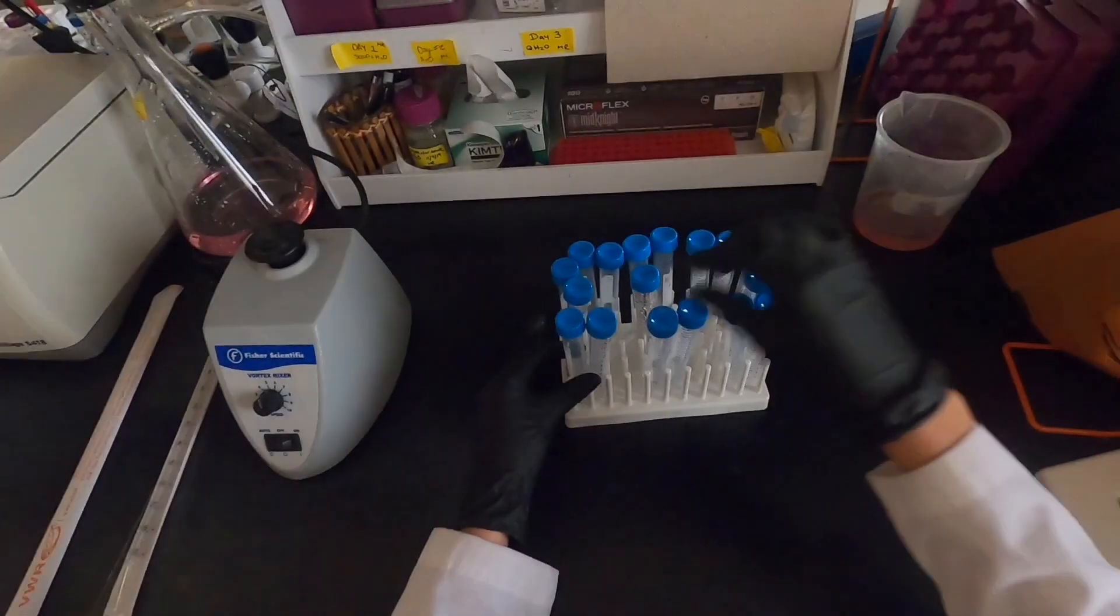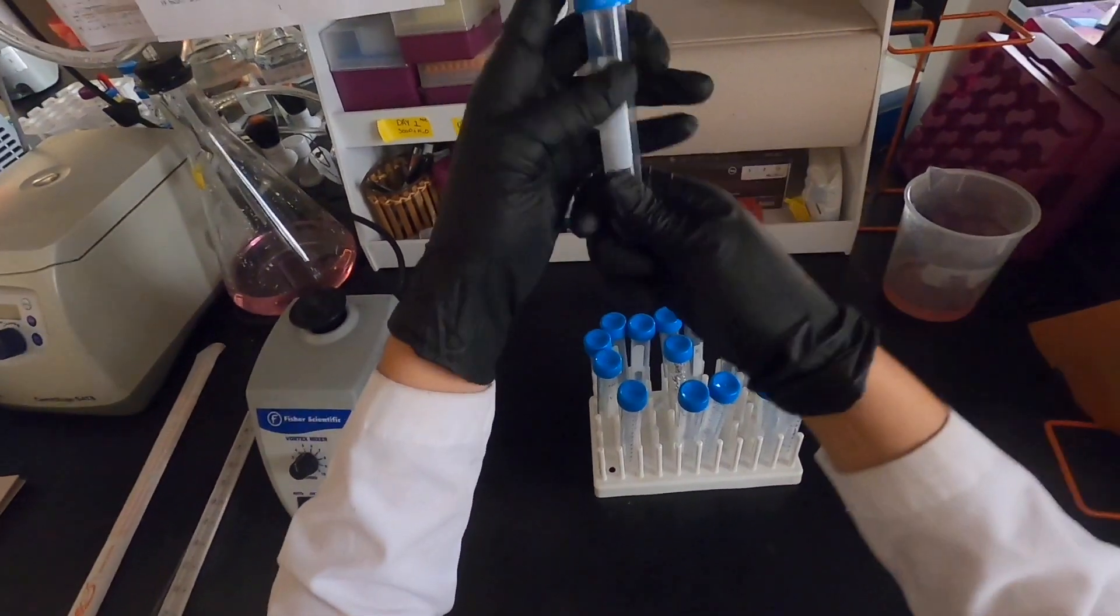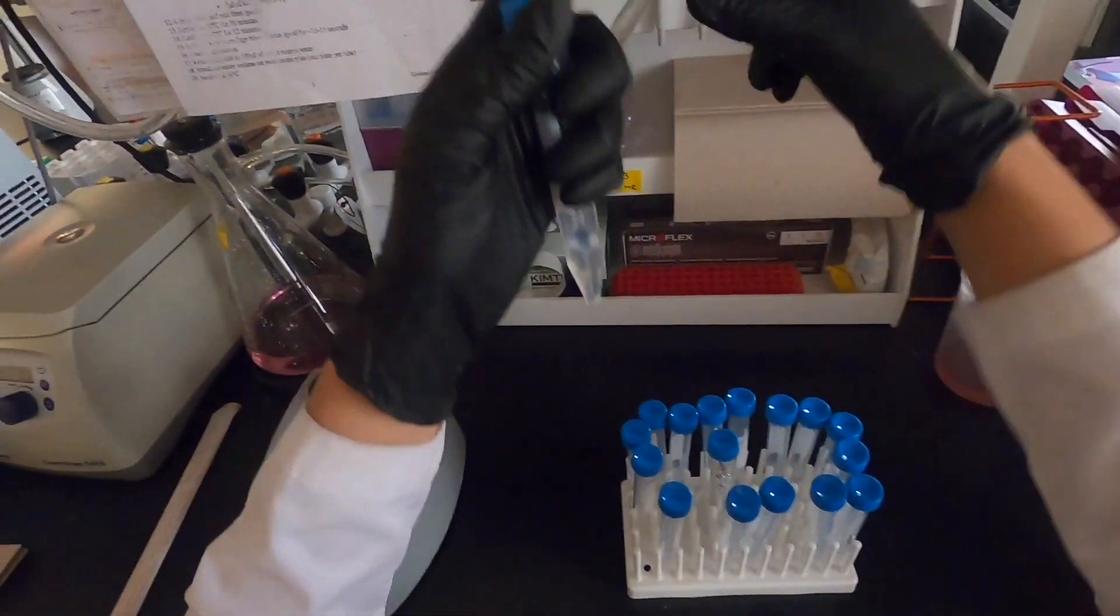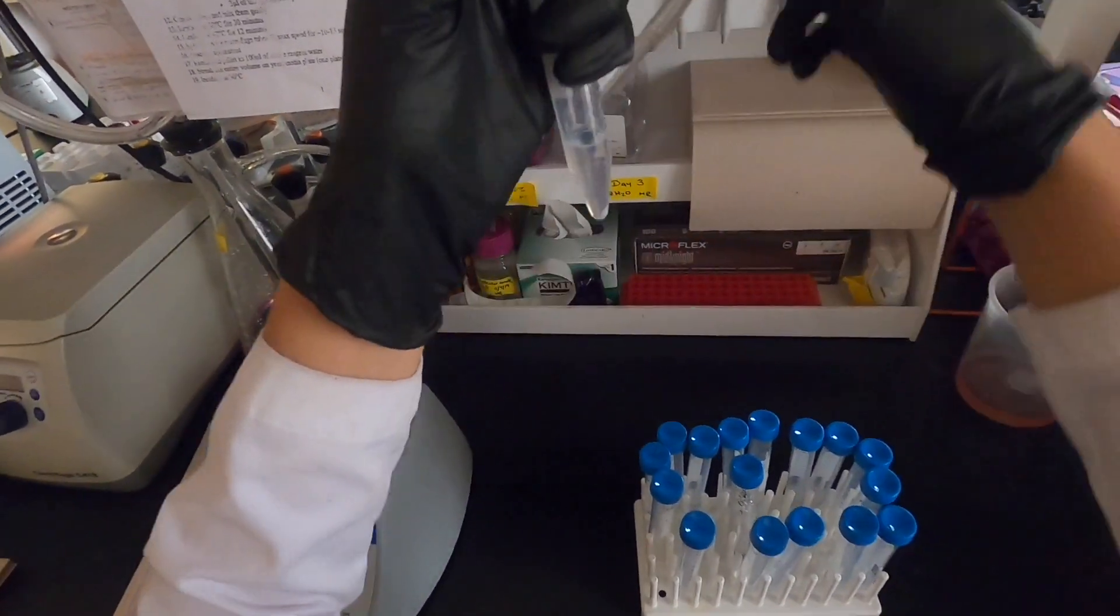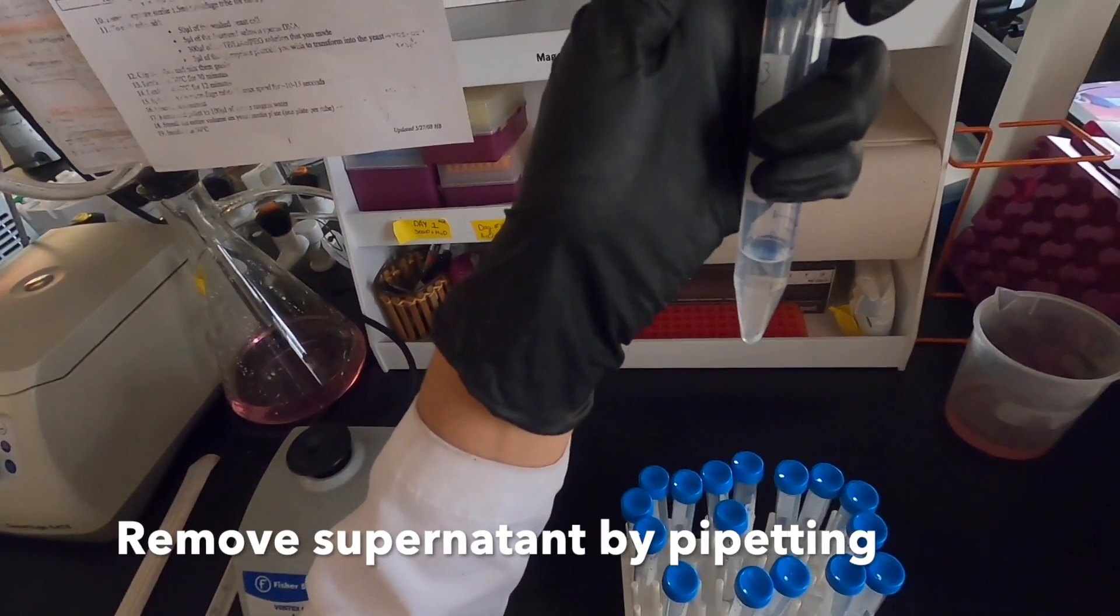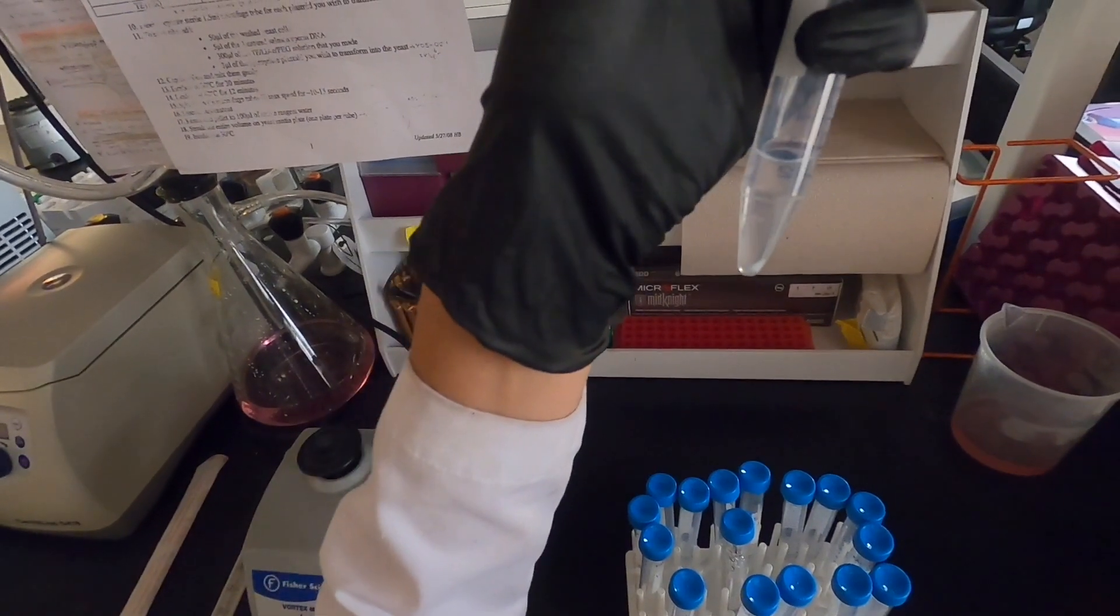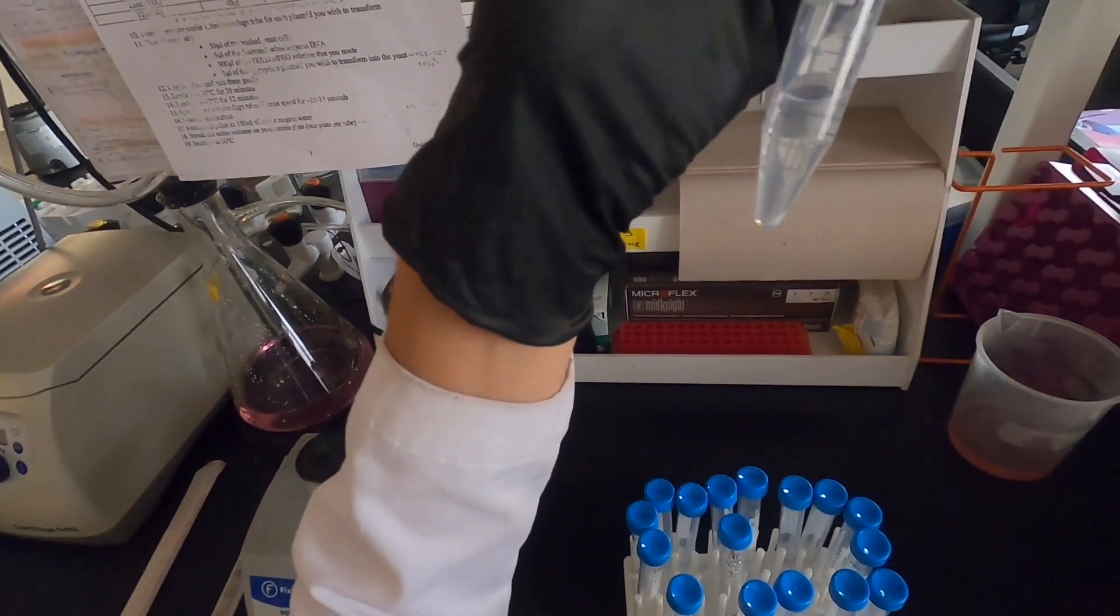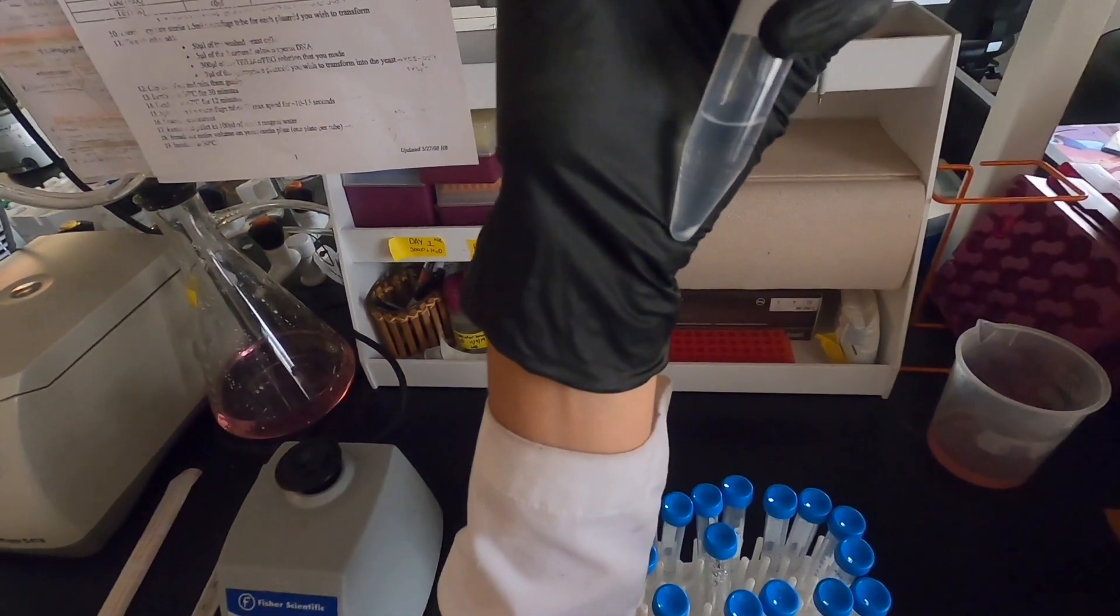This is also followed by a centrifugation step. We are now working under low light conditions since PI is light sensitive. Here we are removing the ethanol solution from the pellet. This time we will not be inverting our tubes. We will gently pipette or aspirate the liquid out of the tube.